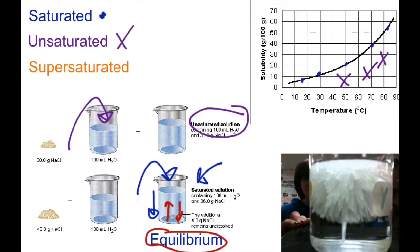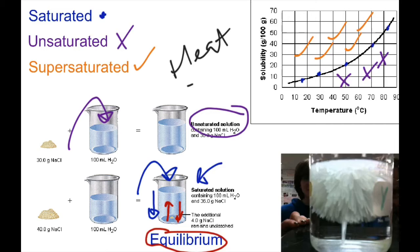Anywhere above the line is supersaturated. In order to get something to be supersaturated, you must heat a saturated solution in order to get it to that state.